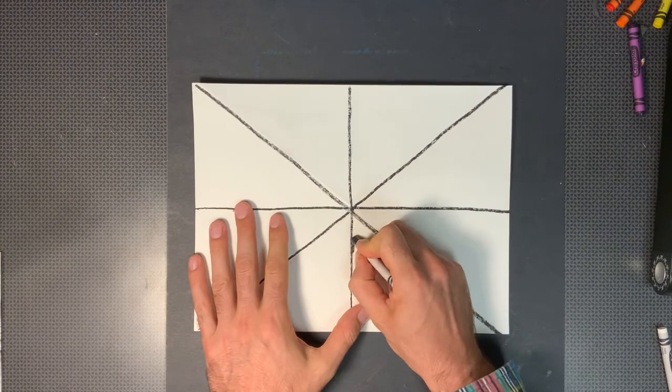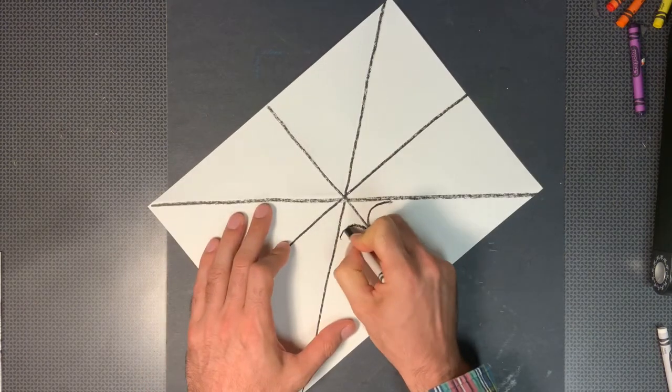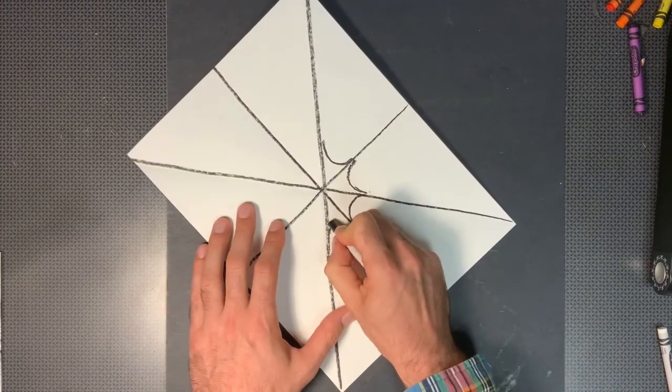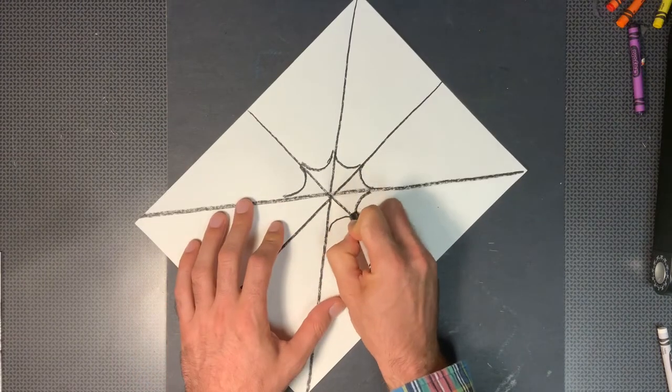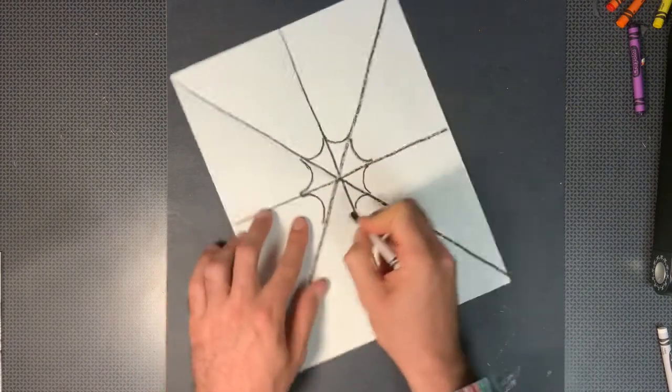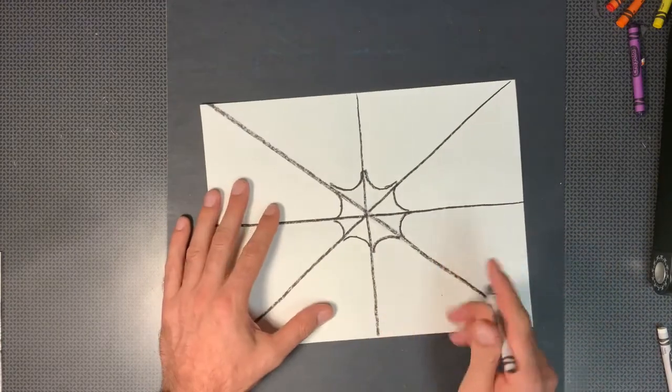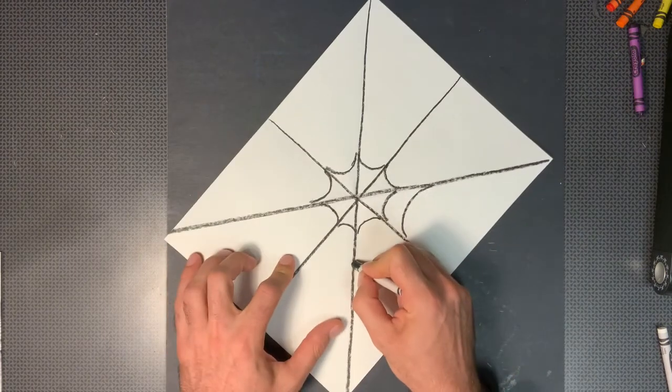So I'm going to go to the middle and I'm going to put a sad face and I'm going to turn my paper, put another sad face, and we're going to repeat this process all the way around our paper. I've got my first line of webbing. Now I'm going to do the same thing again, big sad face connecting our lines.